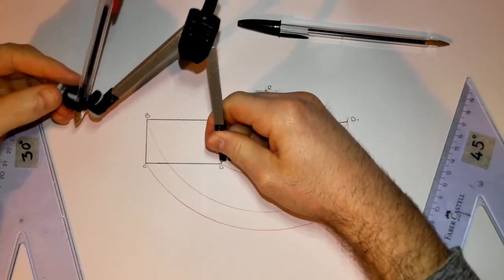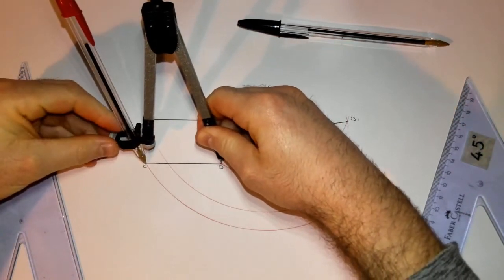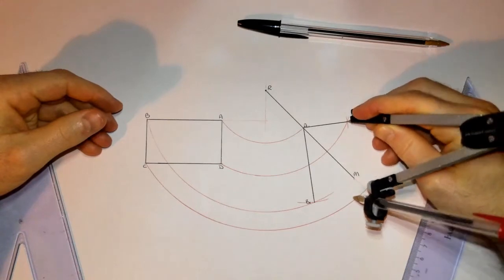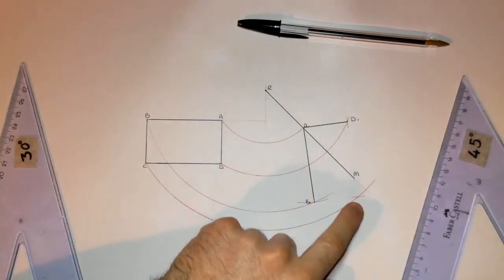I could either take the distance from D to C, like this. I could come to D here, mark it off. That should be C1.